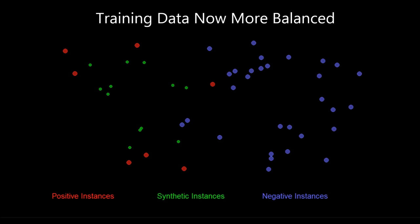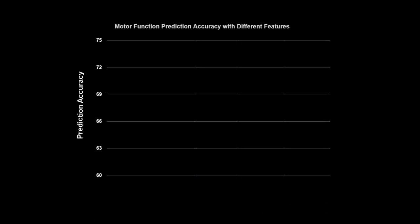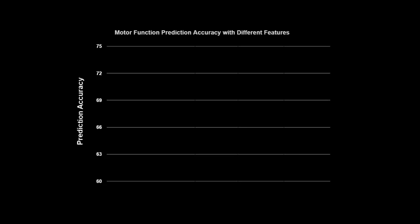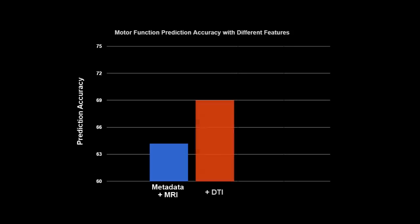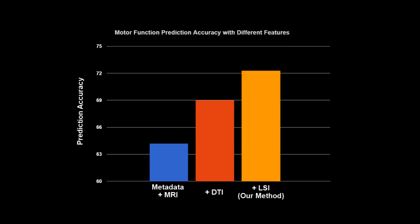We tested prediction of motor abnormality with different feature sets using a thousand rounds of cross-validation for each test. Compared to using only metadata and information from standard MRI, including connectome features from diffusion MRI improves accuracy above 5%. Augmenting the set of abnormal instances using LSI improves accuracy at an additional 3%.